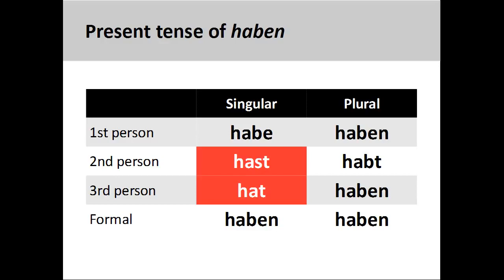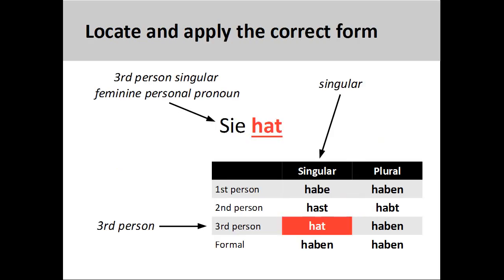For example, you will note that the verb stem for the irregular verb haben, meaning 'to have,' retains the consonant letter 'b' throughout most of the present tense conjugation pattern, with the exception of the second and third person singular, where the consonant is dropped. When dealing with irregular and strong verbs, then, we need to be aware that the second and third person singular conjugations will be different. The sentence 'sie hat,' meaning 'she has,' shows the correct third person conjugation.